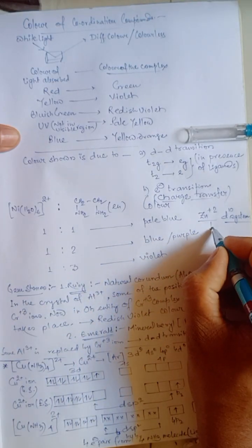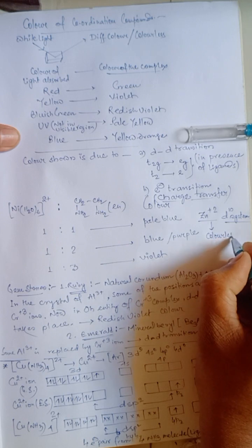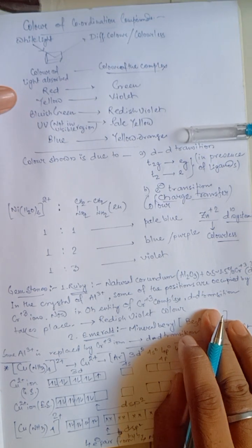So, zinc 2 plus ion shows no color. So, it is colorless. Whenever zinc 2 plus forms a particular complex, it becomes colorless.